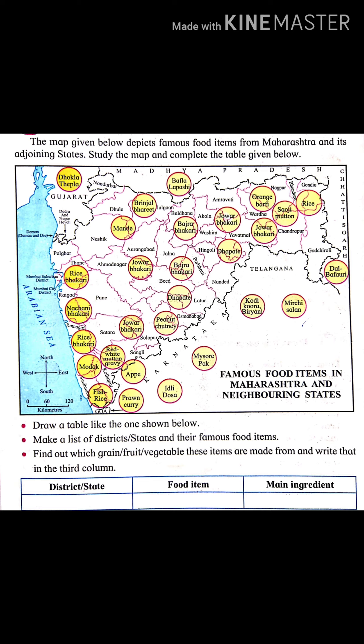Study the map and complete the table given below. Draw a table like the one shown below, make a list of districts, traits, and the famous food items. Find out which grain, fruit, or vegetable these items are made from and write that in the third column. Famous food items in Gujarat are Dhokla, Thepla, etc.